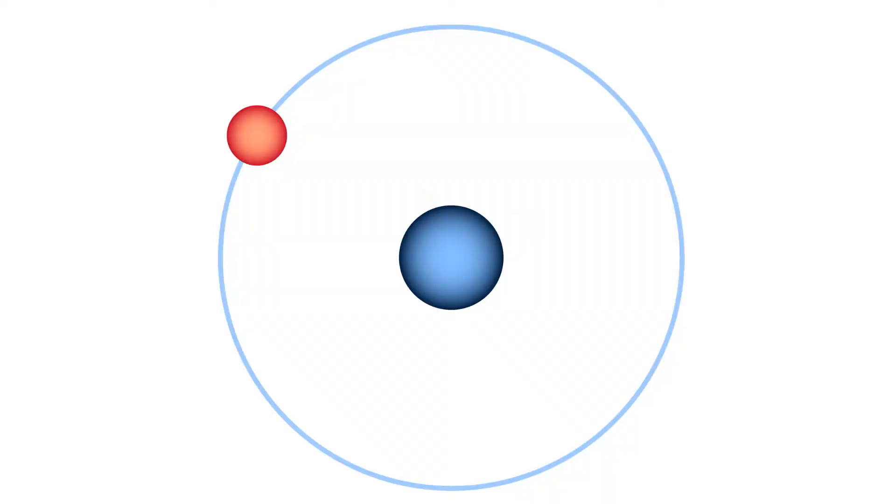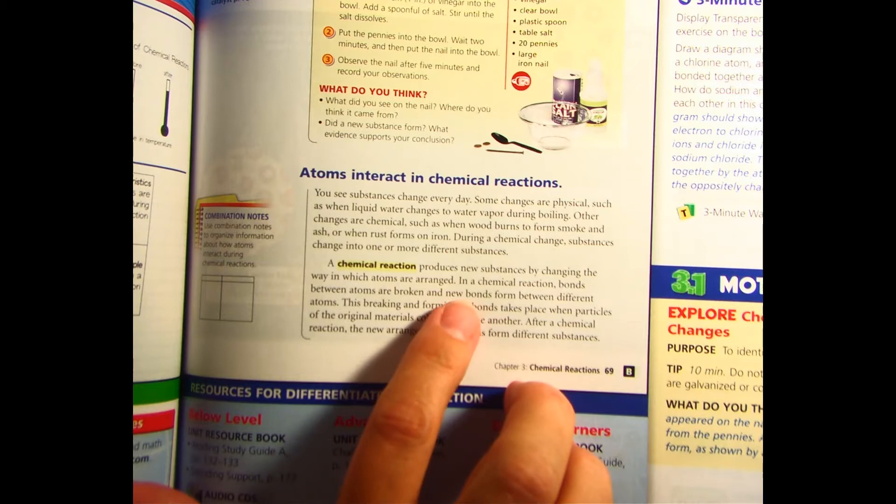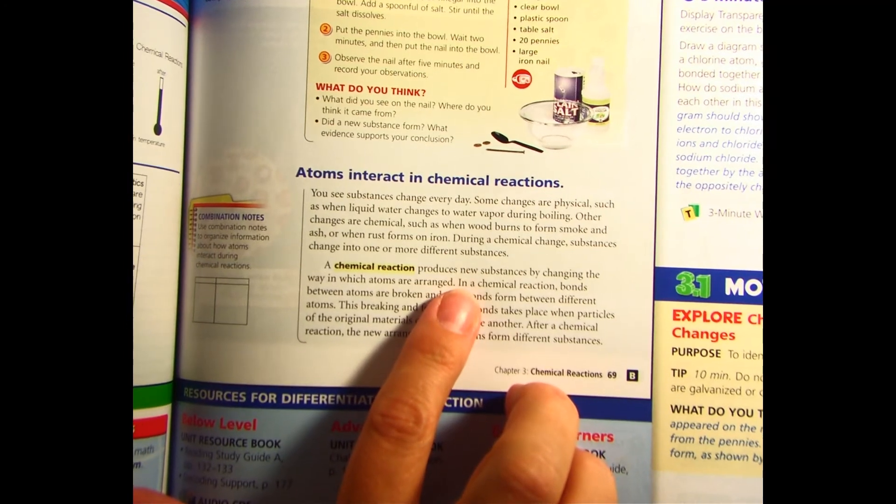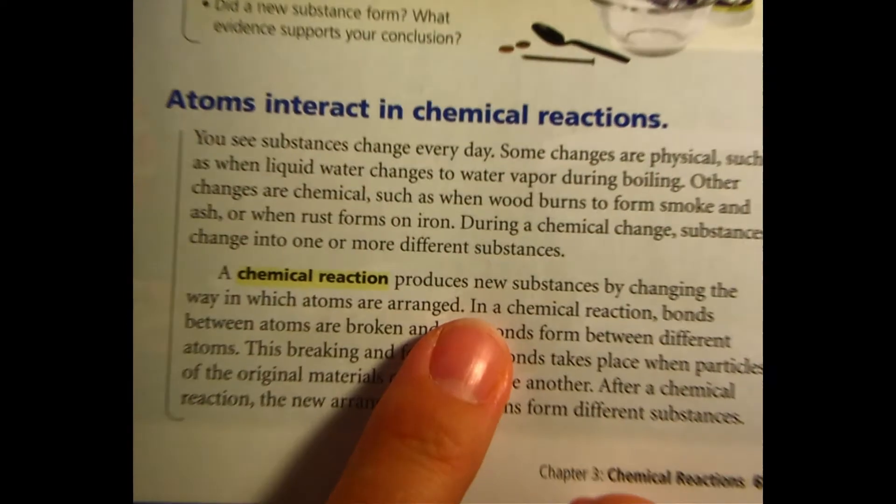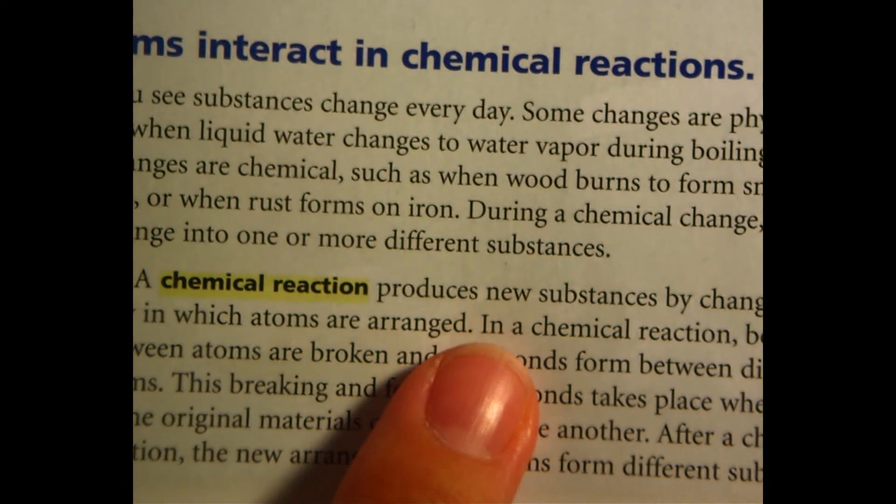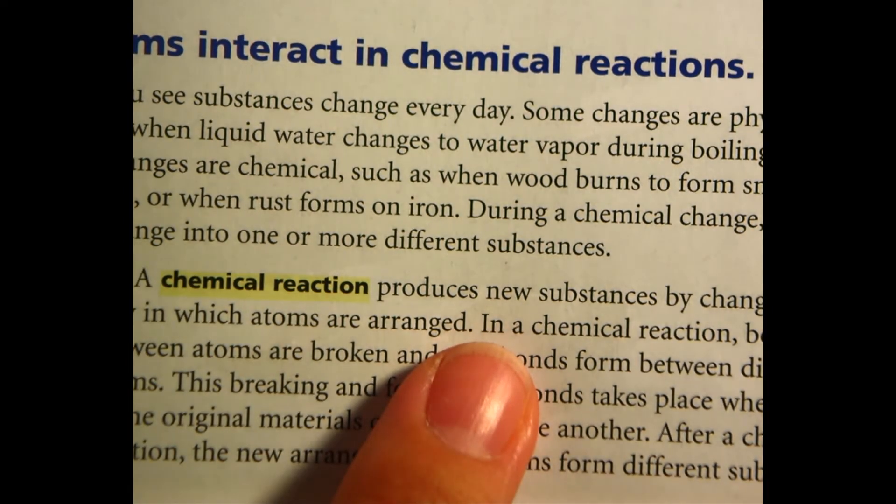Now keep in mind, these atoms and molecules are really small. Look at the period at the end of a sentence in this book. It would take ten million hydrogen atoms, lined up next to each other, to stretch from one side of the period to the other.